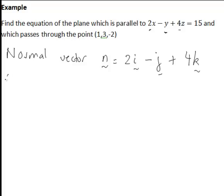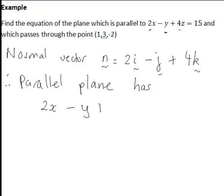And hence, as before it then follows, therefore, the parallel plane could be written with left-hand side 2X minus Y plus 4Z equal to some constant, F. And then to find that constant, F,